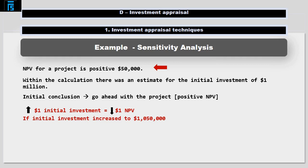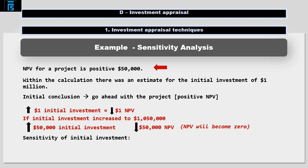In other words, initial investment could increase to $1,050,000 and the project would still be viable. At $1,050,000 that initial investment cost has increased by $50,000 and has therefore eliminated the positive NPV. The NPV would be zero. We would typically express the sensitivity with the following calculation: $50,000 divided by $1,000,000 equals 5% sensitivity.